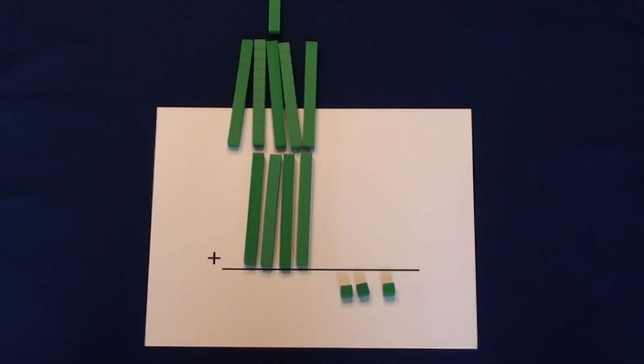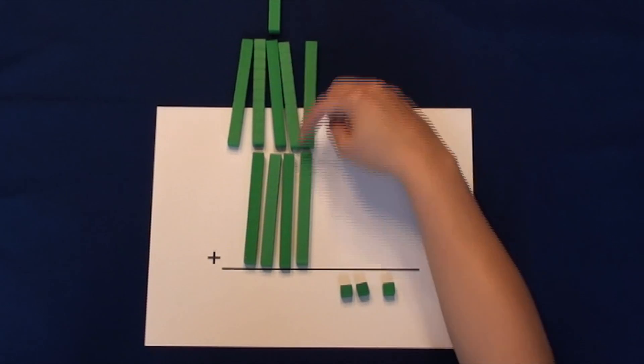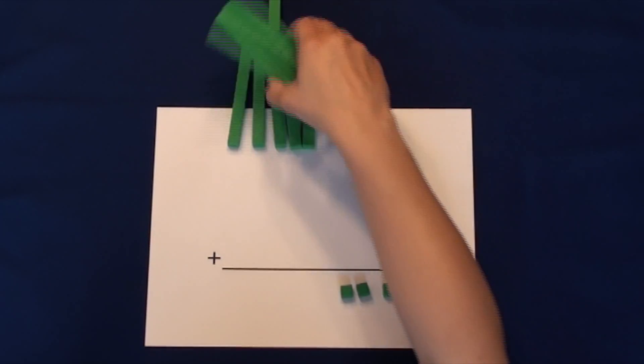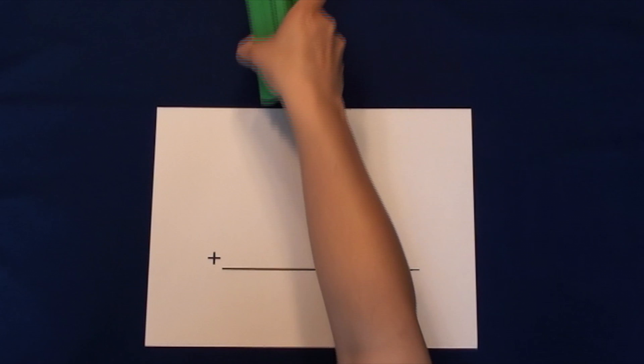Now we're ready to move on to the 10's column. Let's add the tens together. There are 10 tens. Whenever we make 10 more, we have to trade up and regroup.